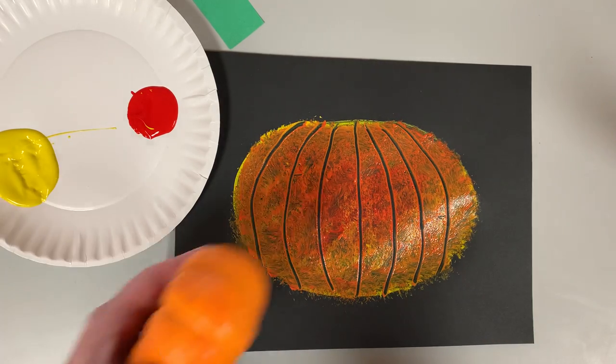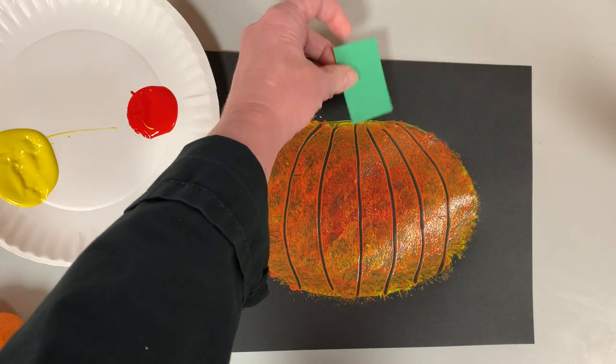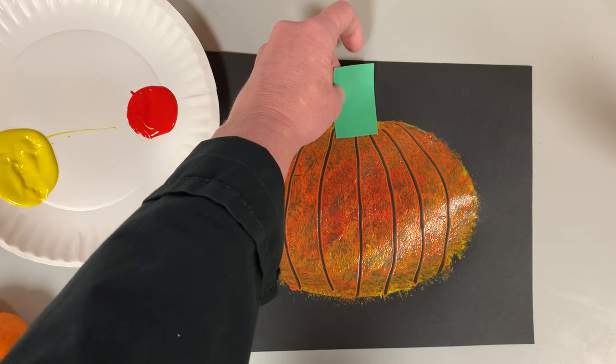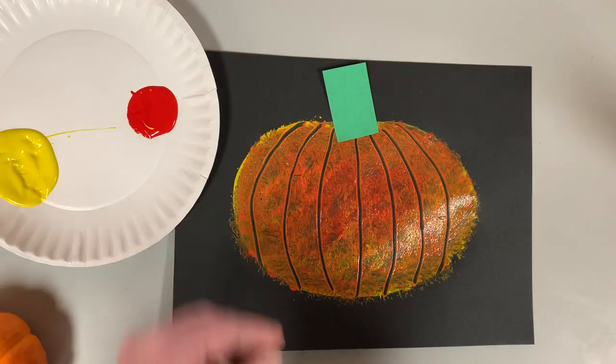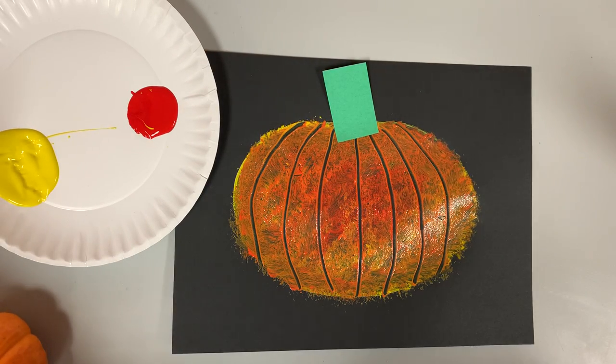Now some pumpkins, this one doesn't have any, but some pumpkins have stems. So you could take yours and put it just a little bit in the paint so it'll stick and make mine a little crooked because sometimes they are. And then you have your orange pumpkin. Have fun!